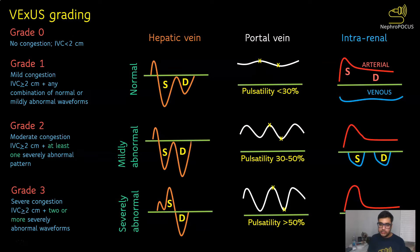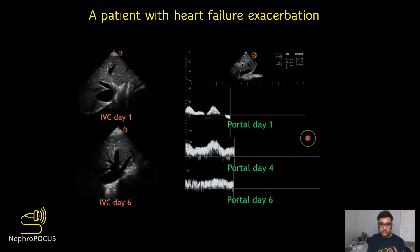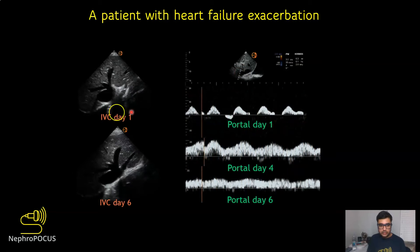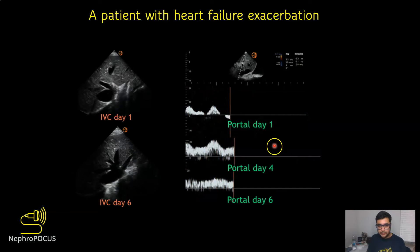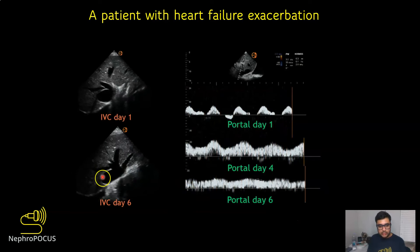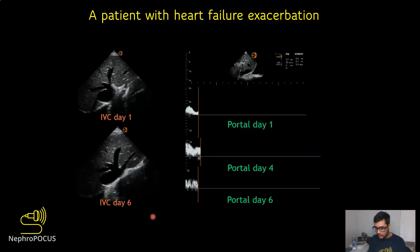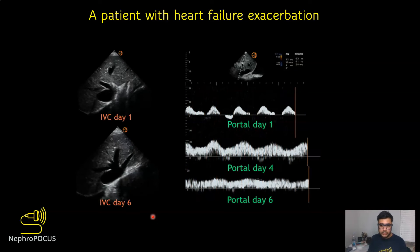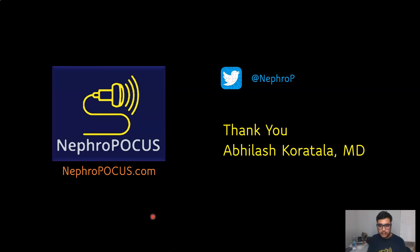VEXUS not only quantifies venous congestion but also allows you to monitor changes with decongestive therapy. Here is a nice example of a patient with CHF exacerbation: the IVC is plethoric and the portal vein is 100% pulsatile. With diuretic therapy, the portal vein gradually improves and essentially normalizes by day 6, while the IVC is still about 2 cm. This is very helpful in patients with chronically treated IVCs due to severe cardiac failure, pulmonary hypertension, or structural tricuspid regurgitation. That's it for now — thank you so much, and follow me on Twitter at NephroPI.